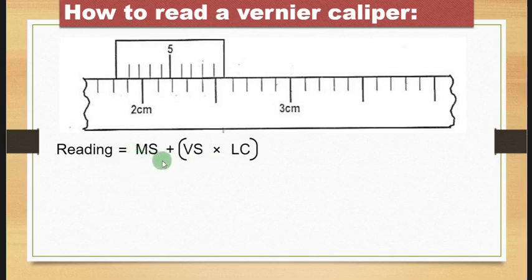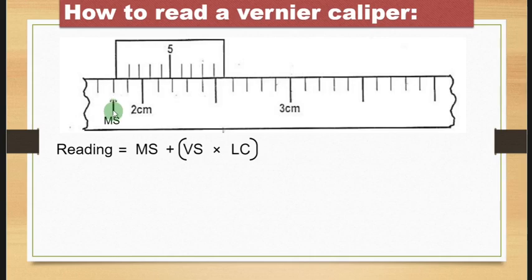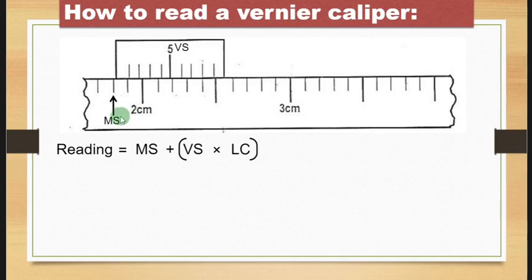So what is MS? MS is the main scale — this one here. We call it MS for short. Where do you get the reading for the main scale? The reading for the main scale is taken from this line here — the line before the line for the Vernier scale. This one here is actually the Vernier scale (VS). The line before the line for the Vernier scale is where we take the reading from for the main scale.